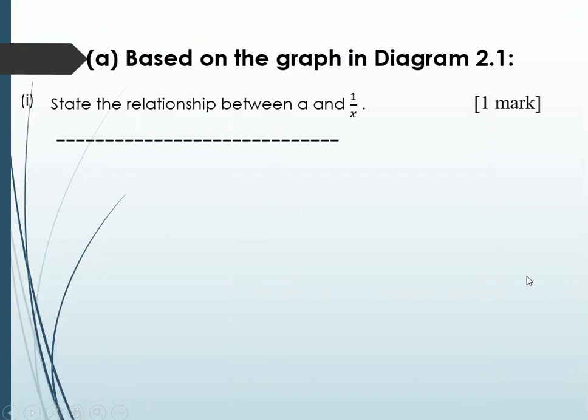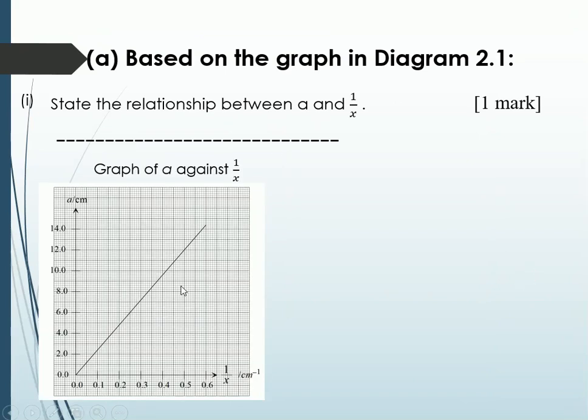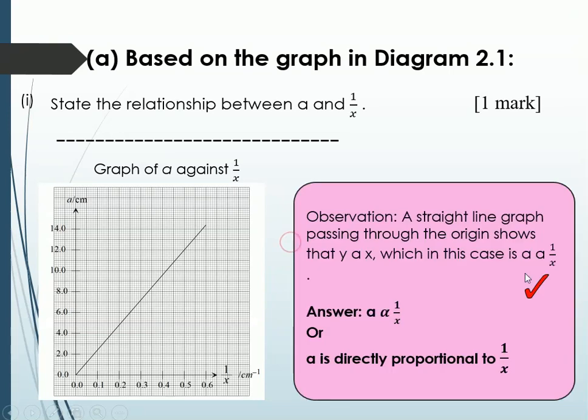Back to our question. State the relationship. It's a straight line graph, positive gradient passes through 0. So which relationship will this be? Alright, by observing, it's actually a directly proportionate to 1 over x. You can use the symbol. Or you can write in sentence. A is directly proportionate to 1 over x. The question is saying a and 1 over x. So you don't have to write a is the distance between two coherent sources. No need. You just have to straight away use a is directly proportionate to 1 over x. So like this, you will get one mark.